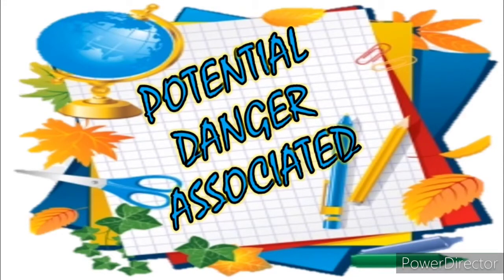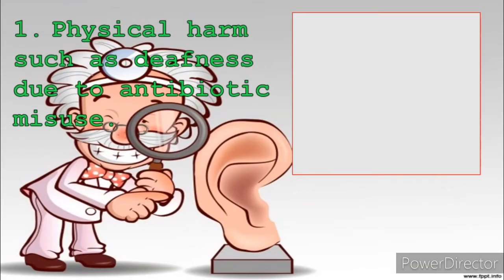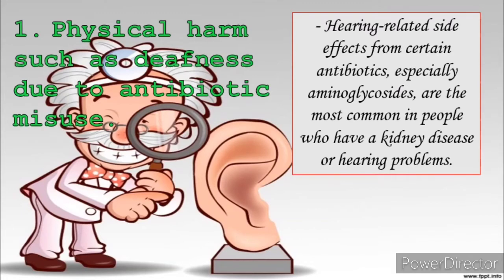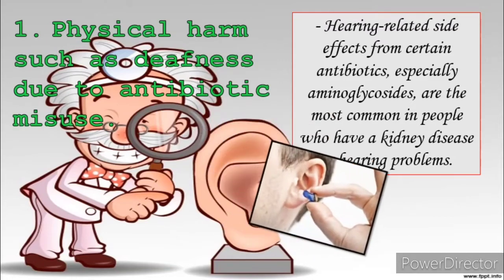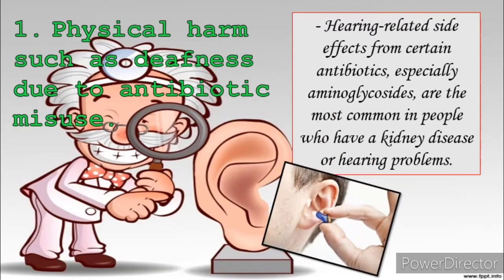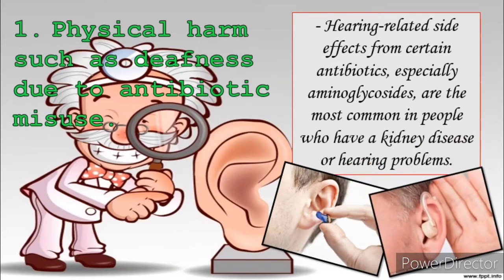There will always be danger from misuse and abuse of medicine, and educating your family and friends about these dangers will be of great help. These are the potential dangers associated with medicine misuse and abuse. First, physical harm — such as deafness due to antibiotic misuse. Hearing-related side effects from certain antibiotics, especially aminoglycosides such as streptomycin and neomycin, are most common in people who have kidney disease or who already have ear or hearing problems. Hearing usually returns to normal after stopping the medicine, but some medicines can cause permanent damage to the inner ear, resulting in permanent hearing loss.